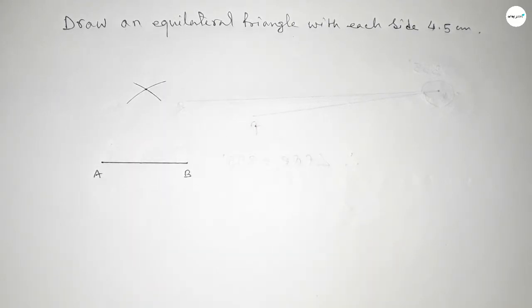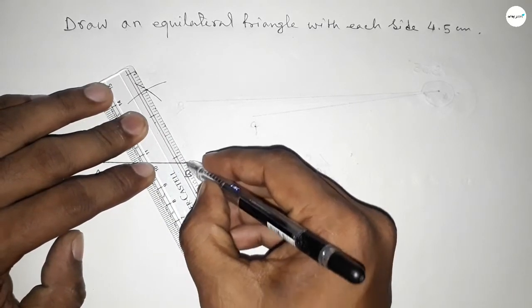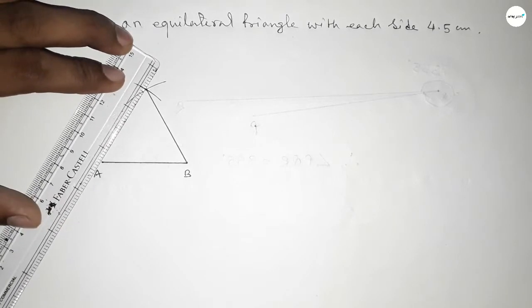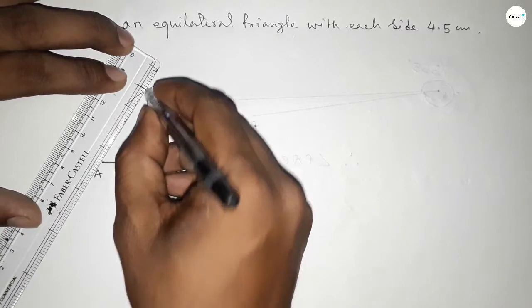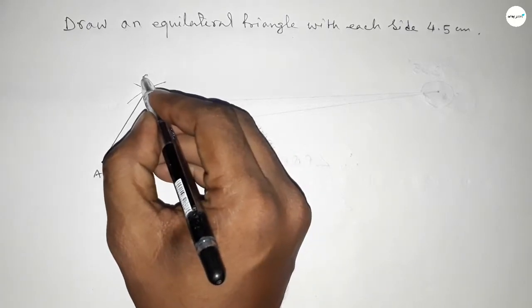Now joining this side and joining this side to get an equilateral triangle with each side 4.5 centimeters. So this is C point.